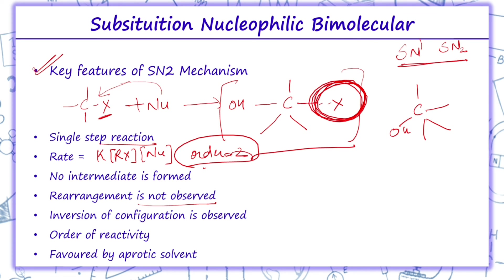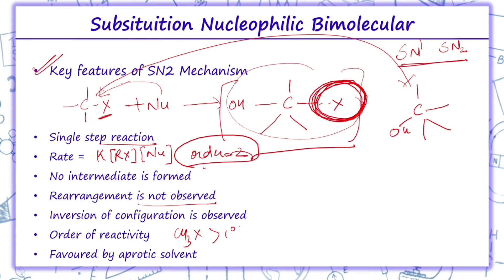In SN2, rearrangement is not observed, and inversion of configuration is observed — the figure gets inverted, which is called Walden inversion. Order of reactivity: methyl halide is more reactive than primary, then secondary, then tertiary halides. These reactions are favored by aprotic solvents.